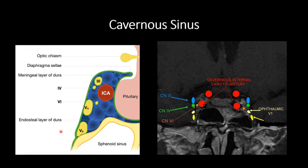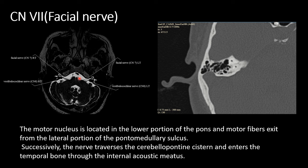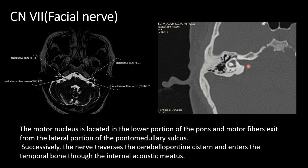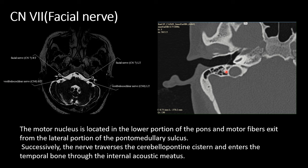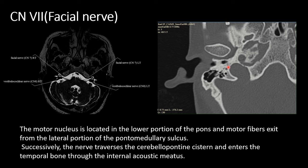The seventh nerve, or the facial nerve: the motor nucleus is located in the lower portion of the pons and motor fibers exit from the lateral portion of the pontomedullary sulcus. It then traverses the cerebellopontine angle cistern and enters the temporal bone through the internal acoustic meatus. Here is a zoomed CT temporal bone image showing the internal acoustic meatus, the canalicular segment, and the labyrinthine segment, which then makes the genu and the tympanic segment of the facial nerve, followed by the mastoid segment, which exits the skull base through the stylomastoid foramen.